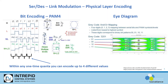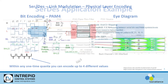In some links they use PAM4, which has four discrete voltage levels within one time quanta, doubling the number of bits possible at any given time — but at the cost of noise susceptibility. Shown here is what's typically called an eye diagram, depicting the bit encoding and gray code.